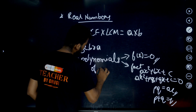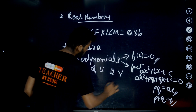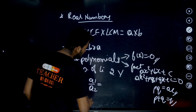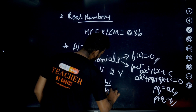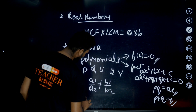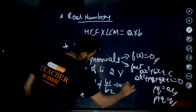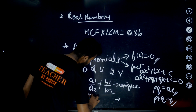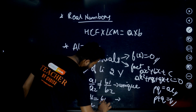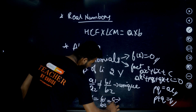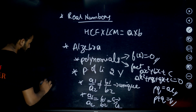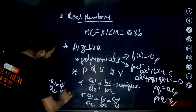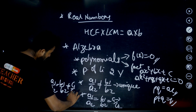Pair of linear equations in two variables — nature of solutions is very important. For a unique solution: A1/A2 is not equal to B1/B2. For infinitely many solutions: A1/A2 = B1/B2 = C1/C2. For parallel lines (no solution): A1/A2 = B1/B2 but not equal to C1/C2.